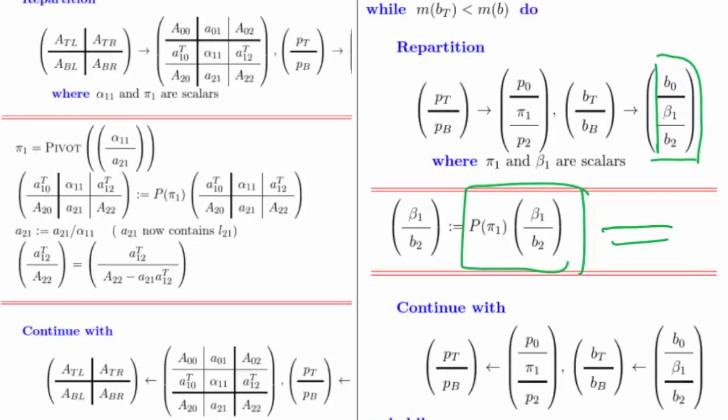That then permutes your right hand side in exactly the same way as if it had been part of an appended system. And then all you have to do is do your forward and backward substitution.